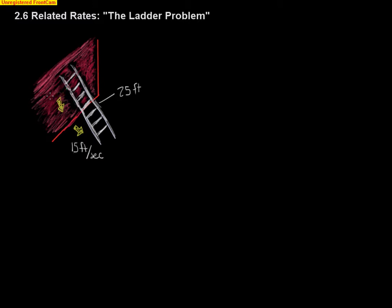We want to know how fast is it sliding down the wall when the top of the ladder right here, top of the ladder, is 7 feet high. So when we do related rate problems, you're always taking the derivative implicitly with respect to time of some basic formula.